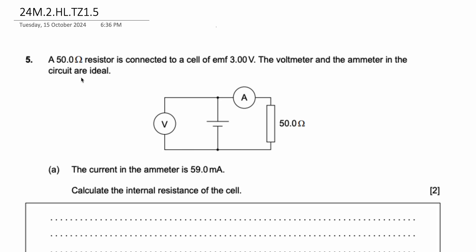Hello everyone, this is your tutor AB. Today we're going to be solving a problem from the IB Physics HL May 2024 examinations. This is a Paper 2 problem. A 50-ohm resistor is connected to a cell of EMF 3 volts. The voltmeter and the ammeter in the circuit are ideal, and here they've given us the circuit.